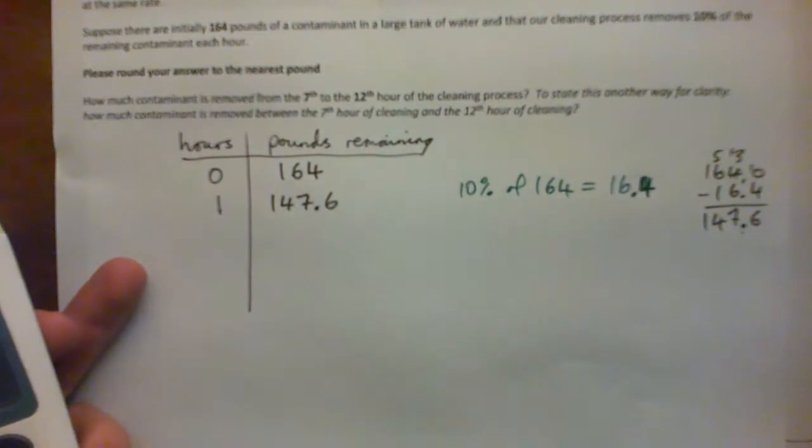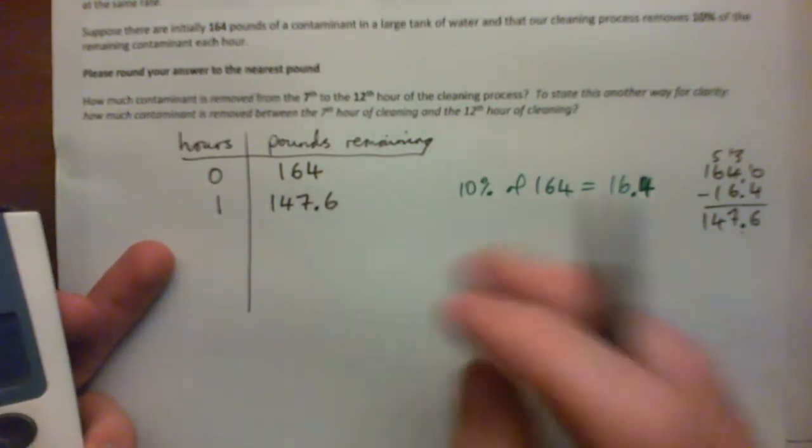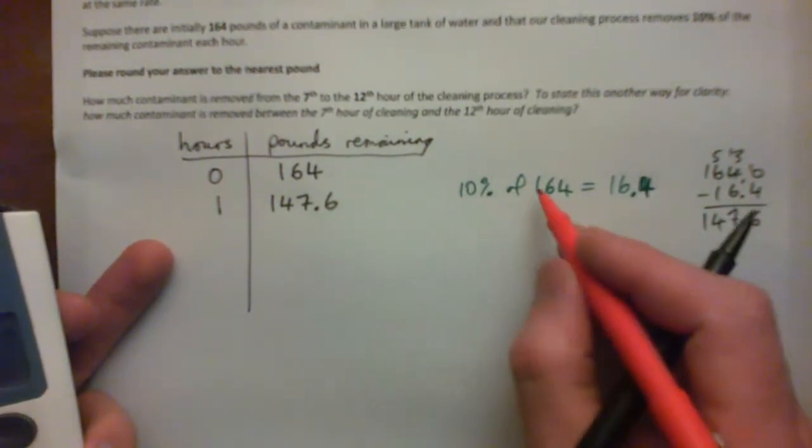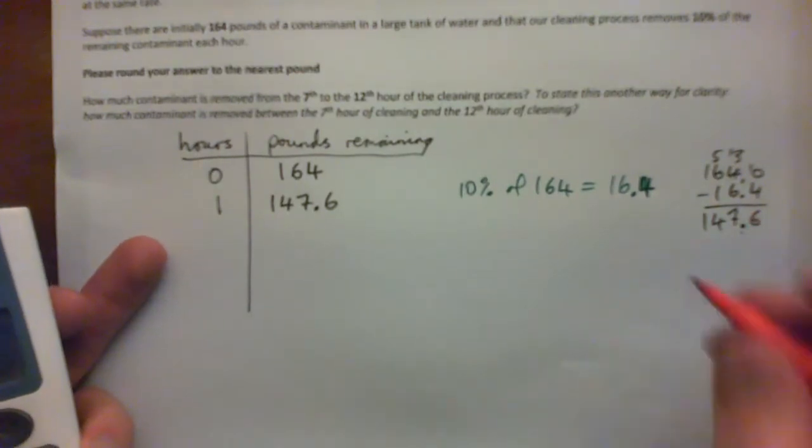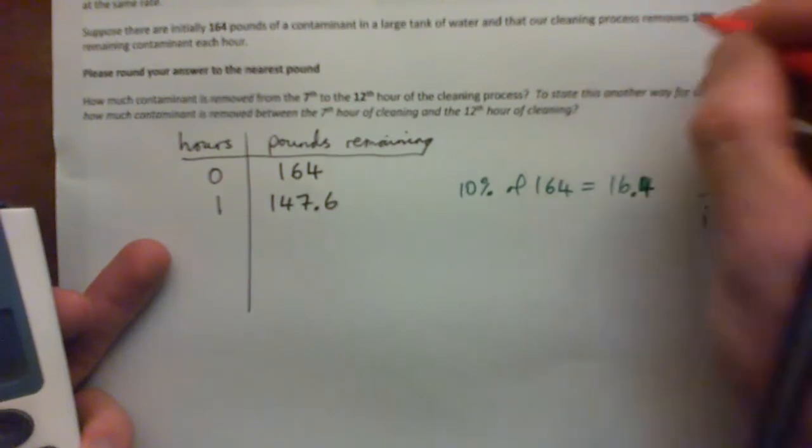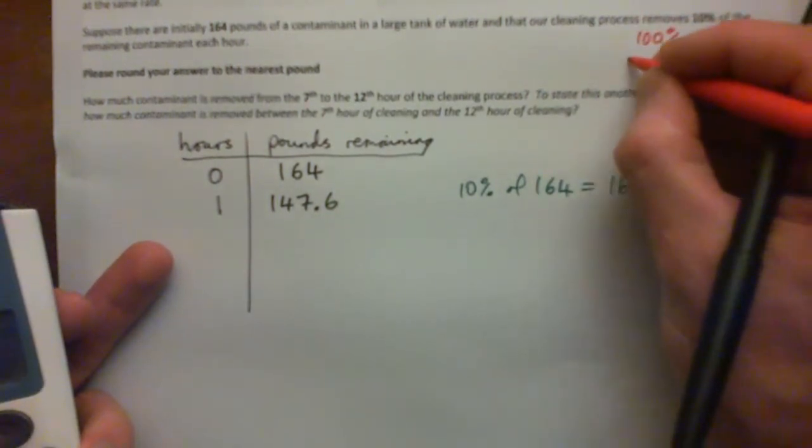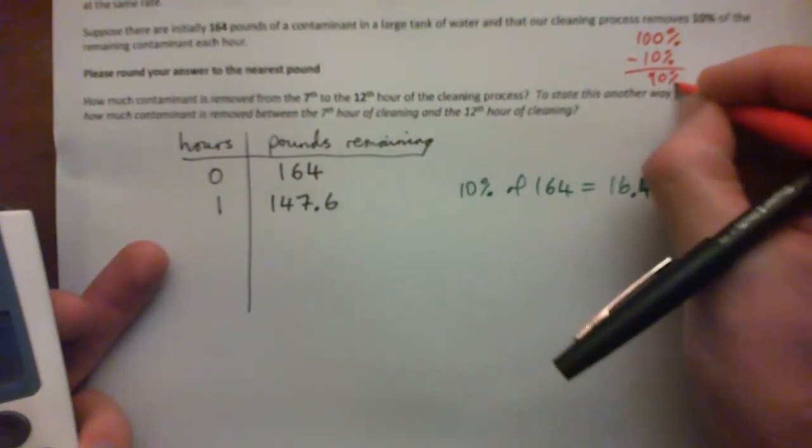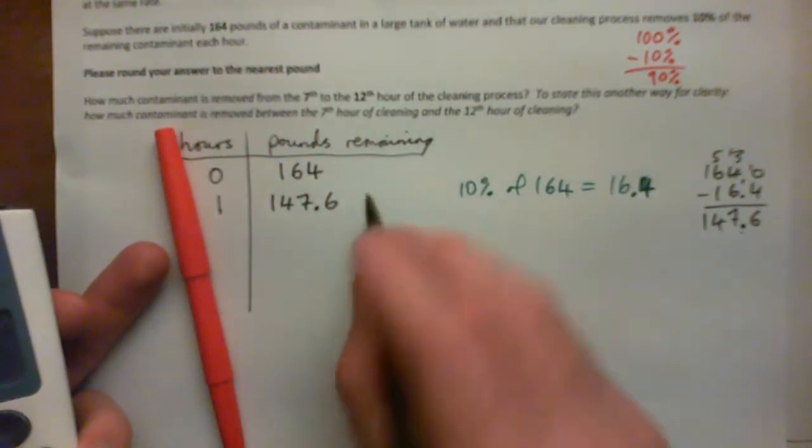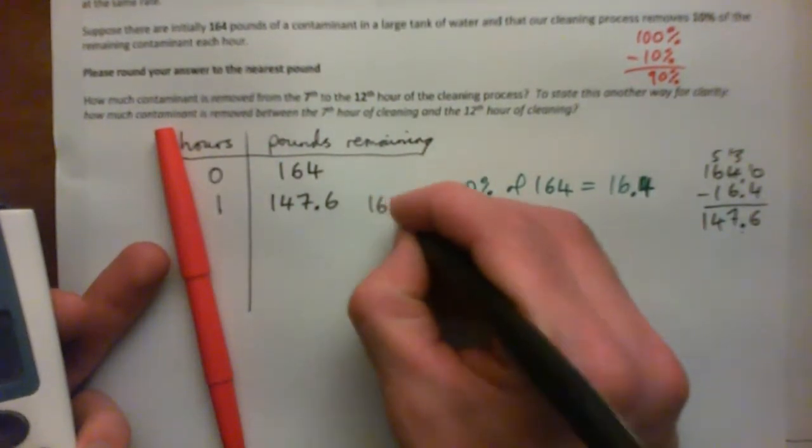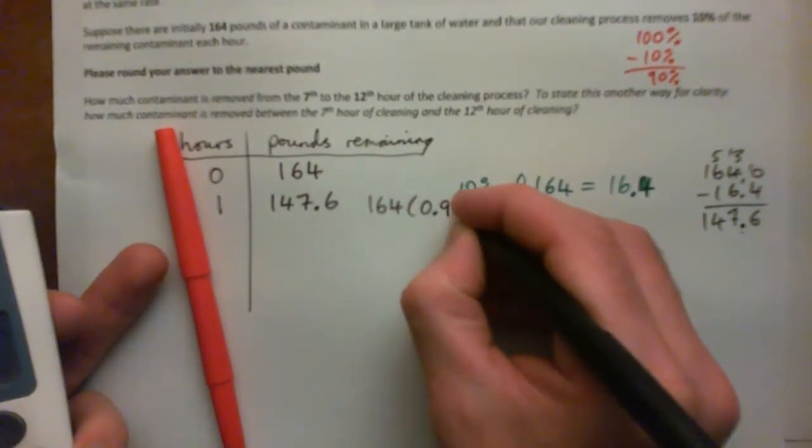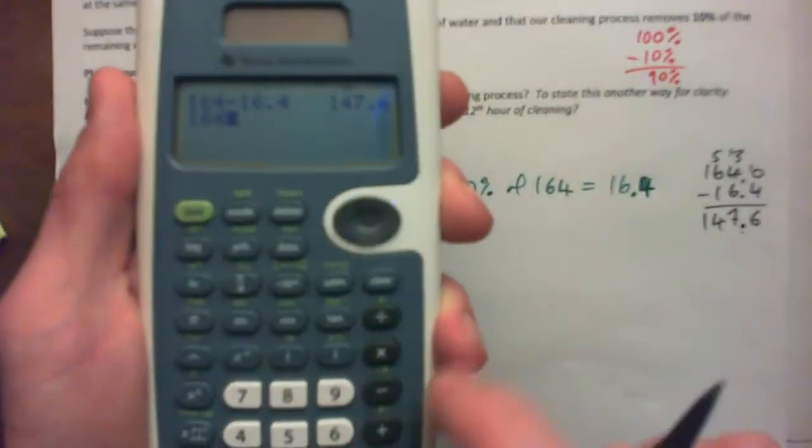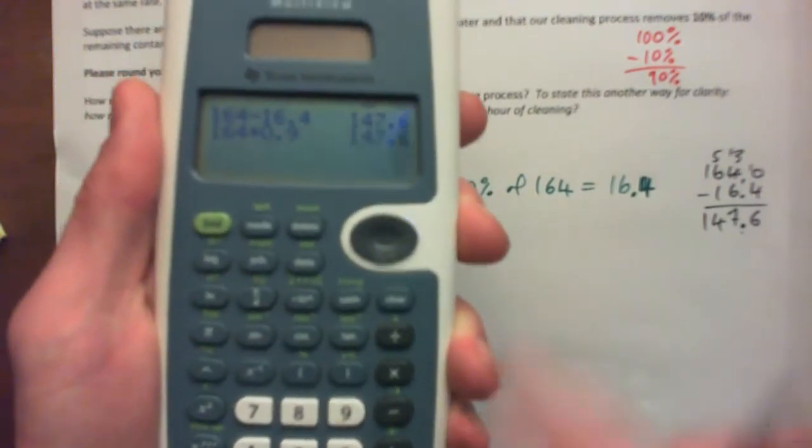But what's the cooler way of doing this? Well, the cooler way is to write it as, instead of working with 10% and then getting 10% and then subtracting, we can say, okay, what's like 100% minus 10%? 100% minus 10% is 90%. And so we can go 164 times 0.9. That's 90%, and that will give us the answer without having to subtract. 164 times 0.9, there we go. 147.6.